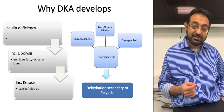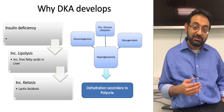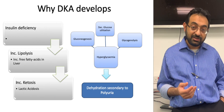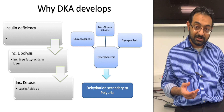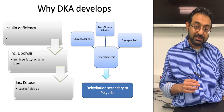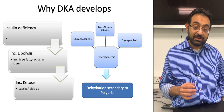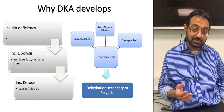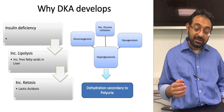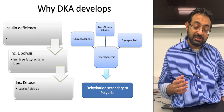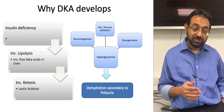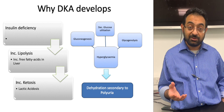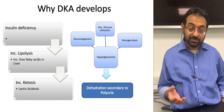Either that's an absolute deficiency or a relative deficiency of insulin. When this deficiency happens, you get lipolysis and that leads to generation of ketoacids, and that's what you actually look at the blood for.